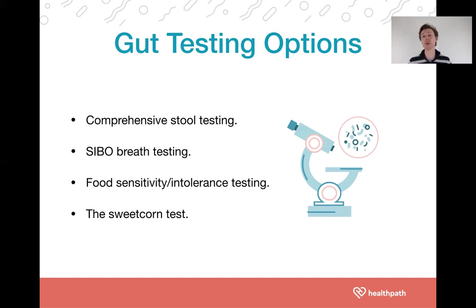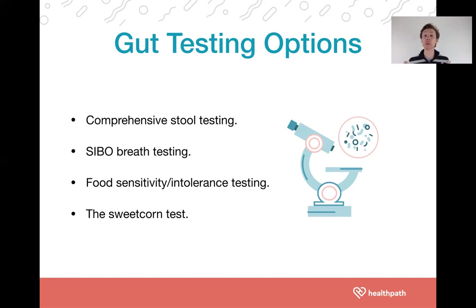You can also consider food sensitivity or intolerance testing — these are two slightly different tests. Lactose intolerance is a classic example: we lack sufficient enzymes to break down the sugar lactose found in dairy; lactase is the enzyme needed, and without enough of it, we get bloating, abdominal pain, and diarrhea. Food sensitivities, by contrast, are an immunological response — the immune system mounting an inappropriate response to a food — and this can be related to microbiome imbalances, immune cell dysfunction, and intestinal permeability, or 'leaky gut.'